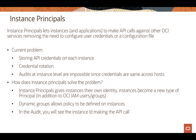To implement instance principles, you first need to create dynamic groups. Dynamic groups allow you to group instances together — all instances that need similar privileges — just like you create IAM groups for users. You create IAM dynamic groups for instances that need similar kinds of policies written against them, then write policies to allow all instances in the dynamic group to make API calls against OCI resources.